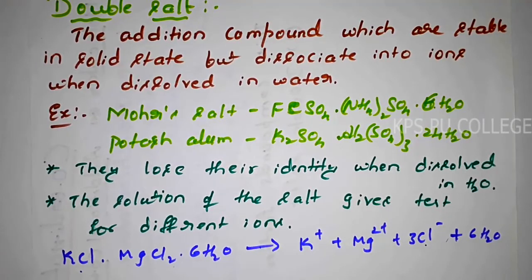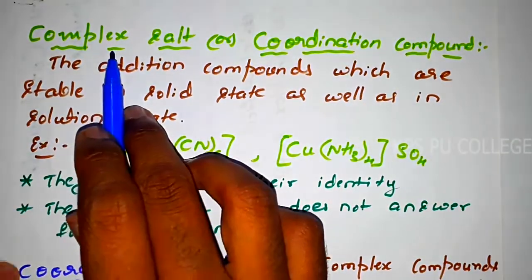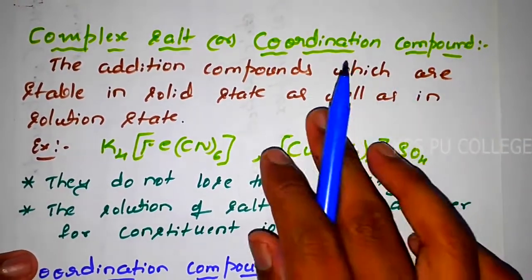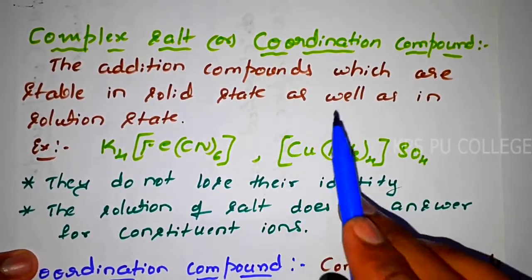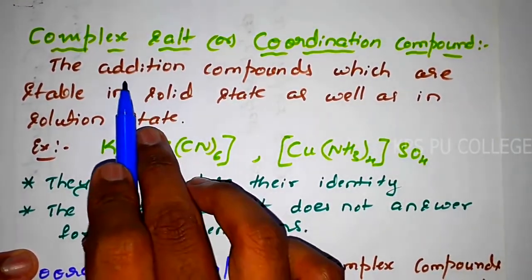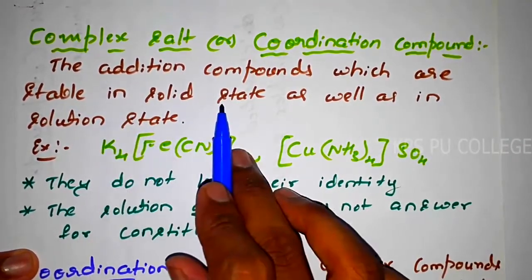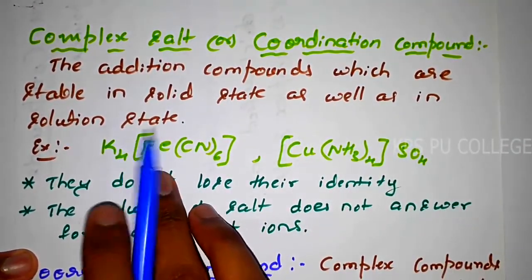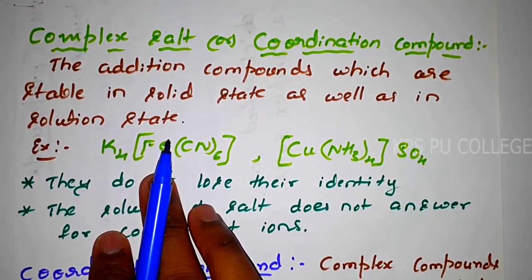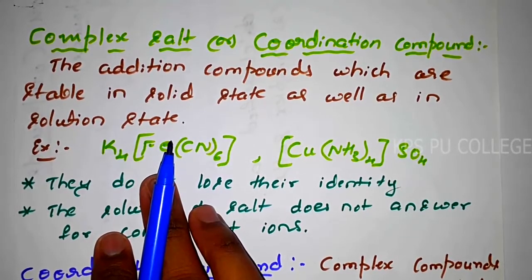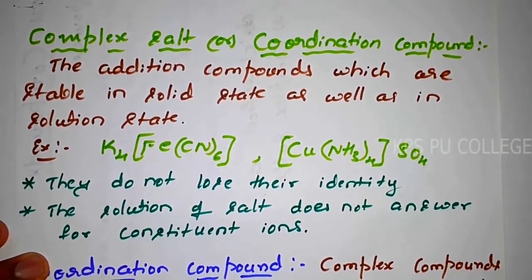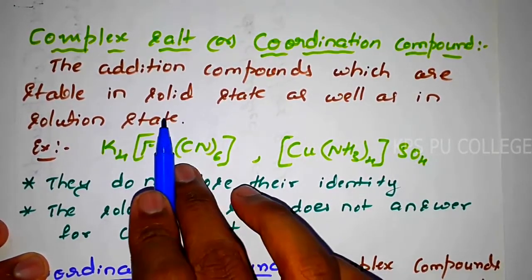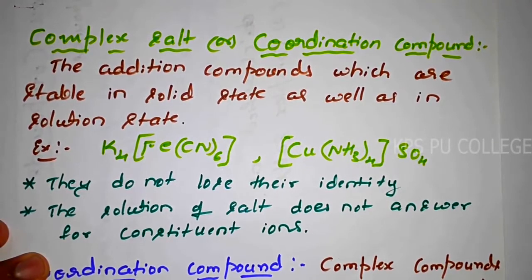Next, we have coordination compounds or complex salt. Unlike double salt, complex salts are addition compounds which are stable in solid state as well as in solution state — even when dissolved in water. This is because there is an absence of free ions; they do not create free ions when dissolved in water.